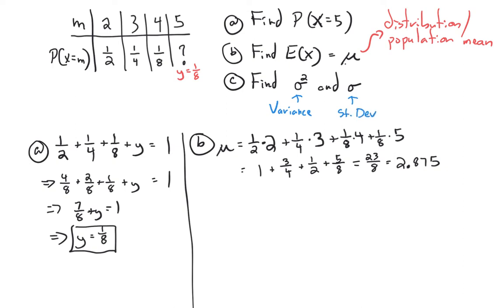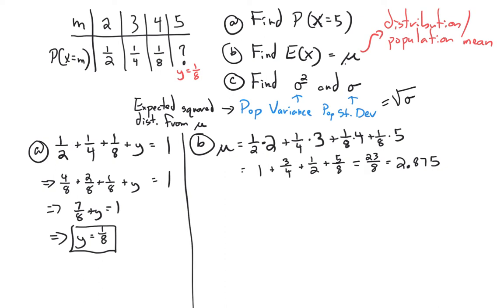Next I want to talk about the variance and standard deviation of this distribution. Again, these aren't sample standard deviations — they're population variance and standard deviation, because we know exactly how this distribution works. The variance is going to be the expected squared distance from the mean, using a weighted average just like before. The population standard deviation is simply the square root of the variance.